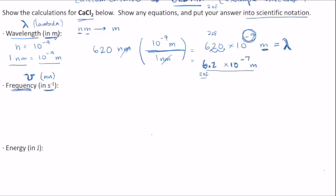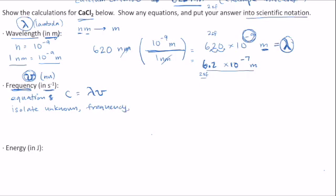When we're looking for an equation, we need to find one that has the symbols for what we know and the unknown we're trying to solve for — we need an equation with lambda and nu. The equation that has both is c equals lambda times nu, or wavelength times frequency. To solve for frequency, we first need to isolate it. Rearranging by dividing both sides by lambda gives us: nu equals c over lambda, frequency equals c over wavelength. Now it's by itself on one side of the equal sign, so we can use this equation.